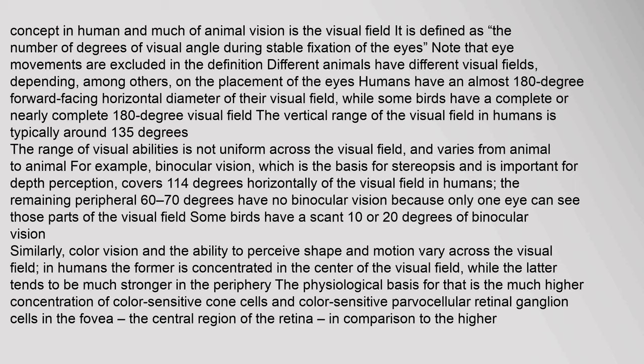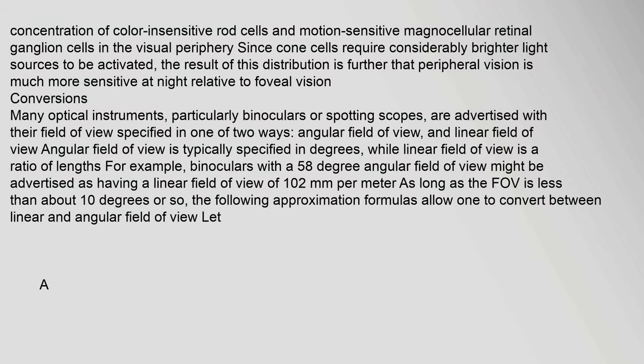Some birds have a scant 10 or 20 degrees of binocular vision. Similarly, color vision and the ability to perceive shape and motion vary across the visual field. In humans, color vision is concentrated in the center of the visual field while motion perception tends to be much stronger in the periphery. The physiological basis for that is the much higher concentration of color-sensitive cone cells and color-sensitive parvocellular retinal ganglion cells in the fovea, the central region of the retina.